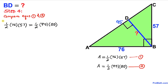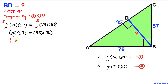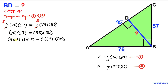Let's solve for BD. Multiply both sides by 2 — the halves cancel — giving us 76 times 57 equals 95 times BD. Now, 76 equals 4 times 19, 57 equals 3 times 19, and 95 equals 5 times 19. So we write: 4 times 19 times 3 times 19 equals 5 times 19 times BD. Dividing both sides by 19, the 19s cancel.